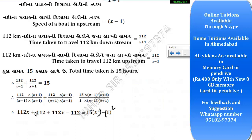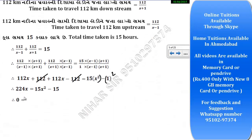The 1.2 and 1.2 terms combine — like terms — giving 2.4x on the left, which equals 224 when scaled. On the right we have 15(x²−1), so expanding: 15x² minus 15. Rearranging, we get 15x² minus 224x minus 15 equals 0, which is a standard quadratic equation.